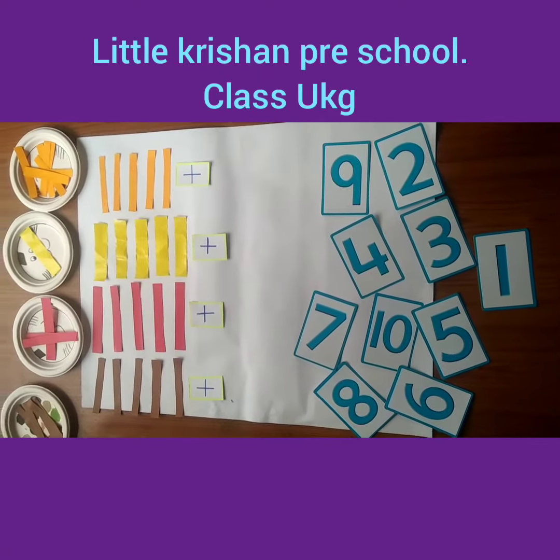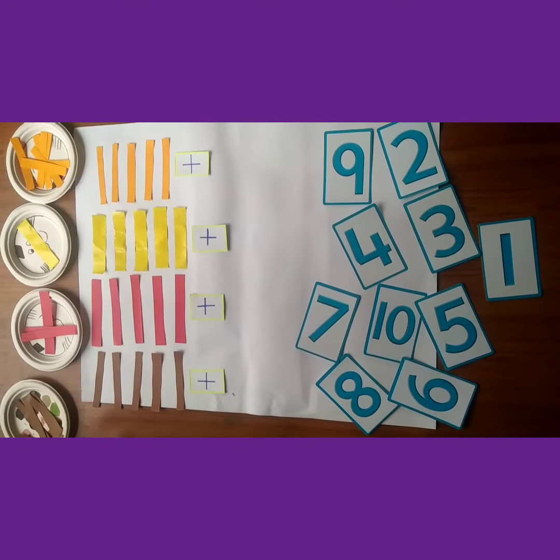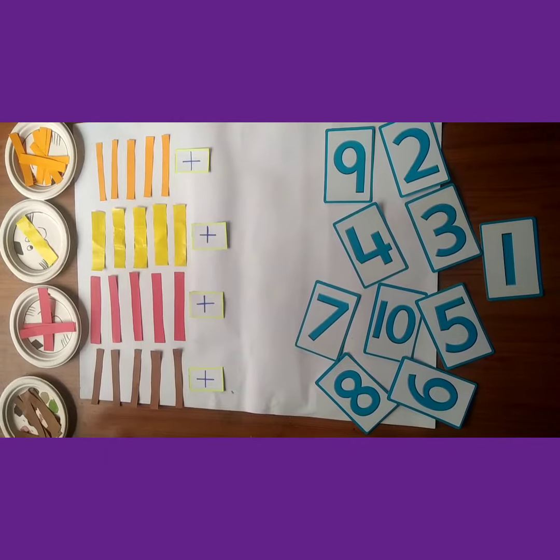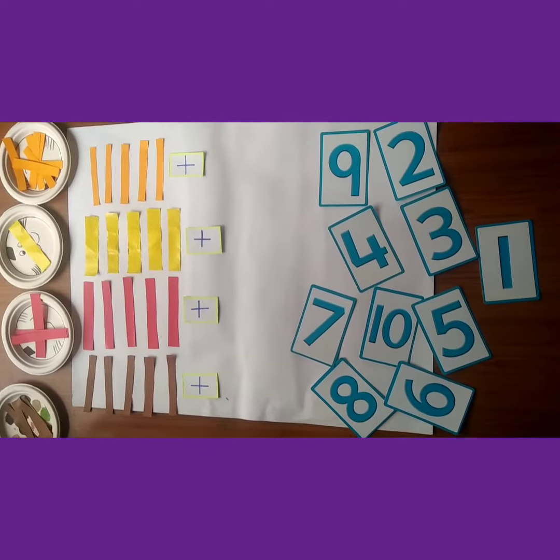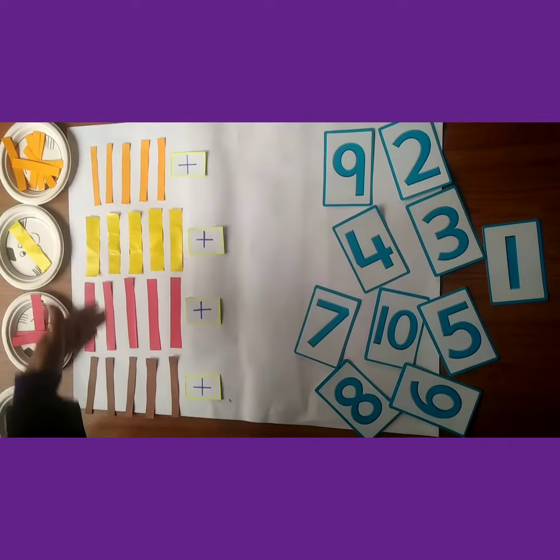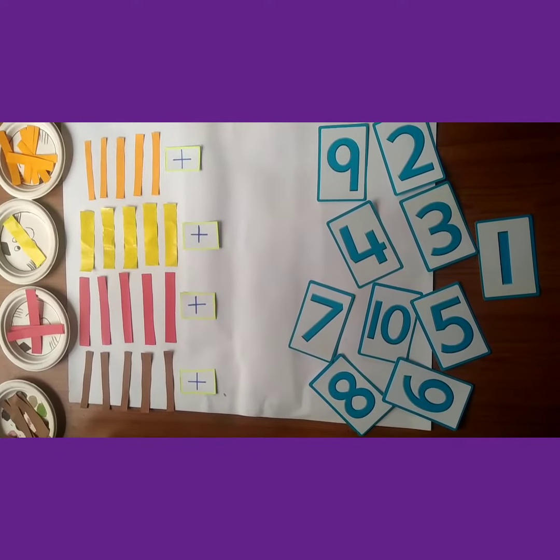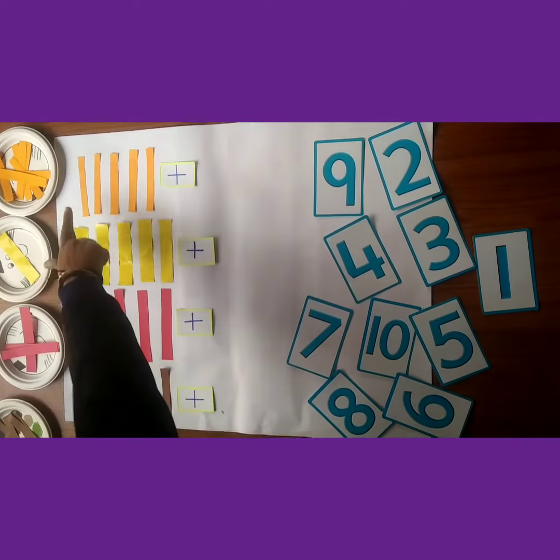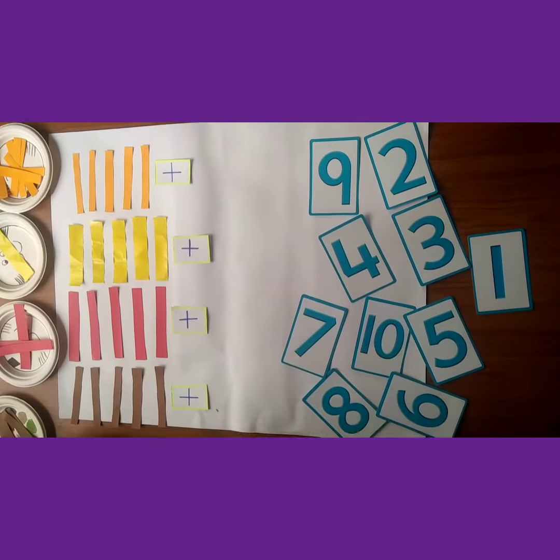Hello everyone, welcome to Little Krishna Preschool UKG class. Today we will do a math activity and we will learn addition sums with help of colorful strips. We place 5 strips of each color.